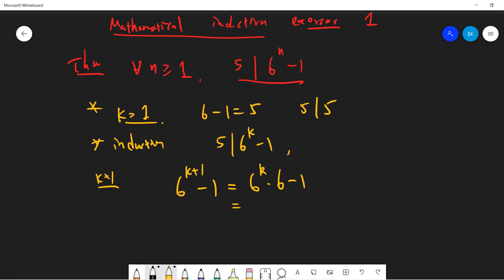So one idea I like to do is that I write the result as 6 to the k times 5 plus 1 minus 1, and it shows 5 times 6 to the k plus 6 to the k minus 1.